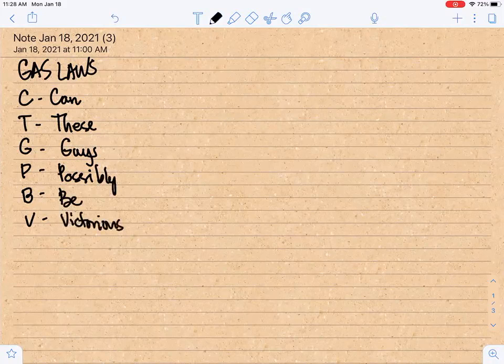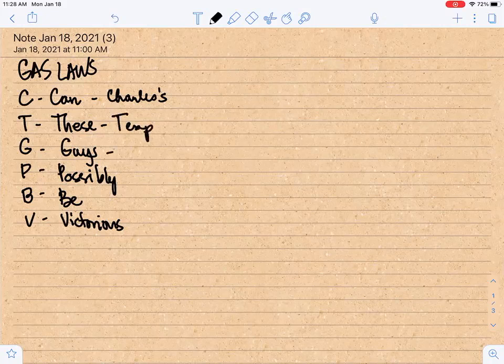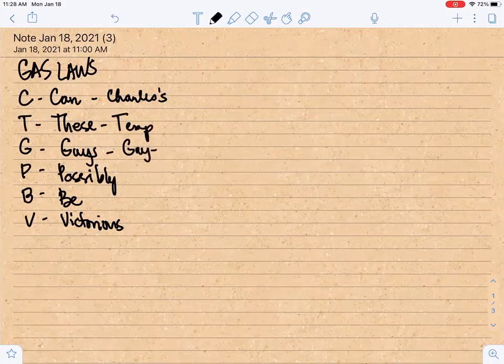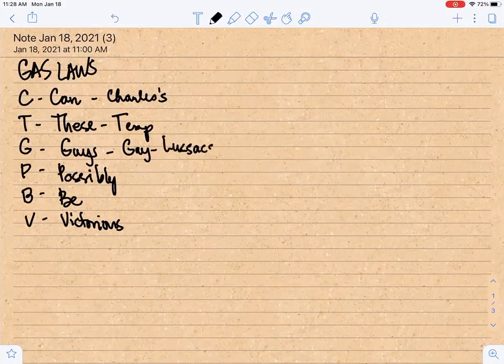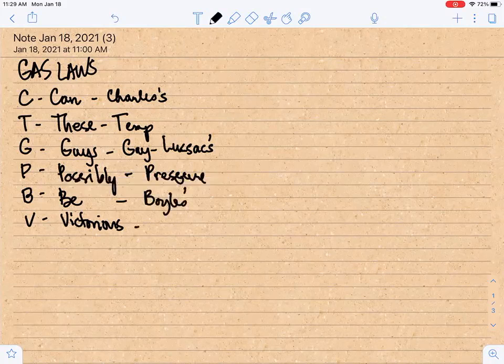These words and letters will represent the things that we have learned in the relationship of gas laws. So C stands for Charles's law. Then T represents temperature. And G for Gay-Lussac's law. And P for pressure. B for Boyle's law. And V for volume.